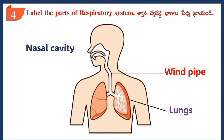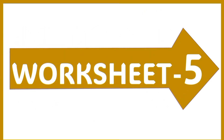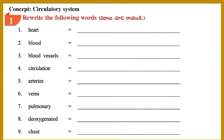Worksheet 5. Concept: Circulatory System. Section 1: Rewrite the following words — Heart.